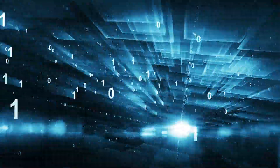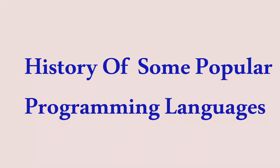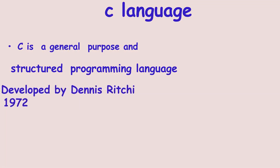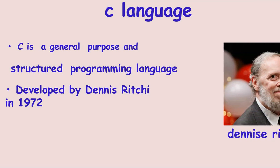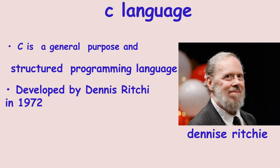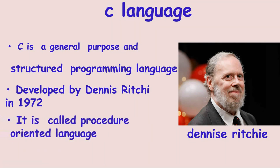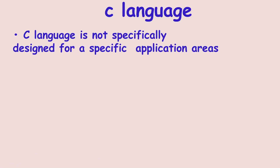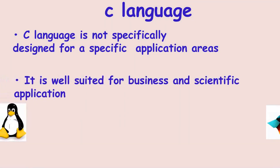This is a general purpose and structured programming language developed by Dennis Ritchie at AT&T's Bell Laboratories in 1972 in the USA. It is also called a procedural-oriented programming language. C is not specifically designed for specific application areas, but it was well-suited for business and scientific applications.